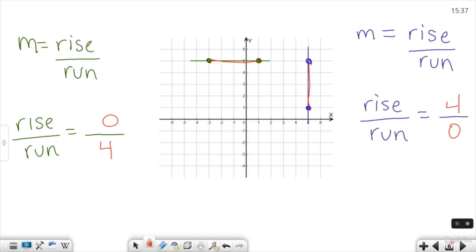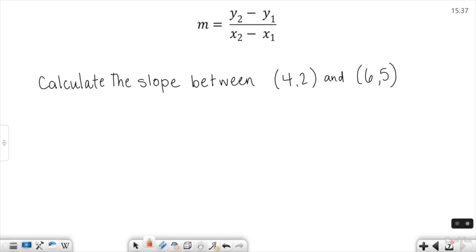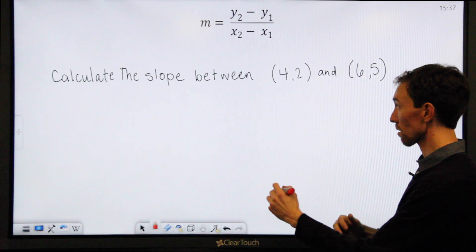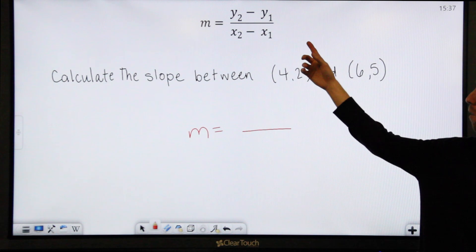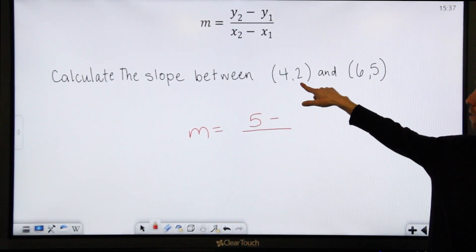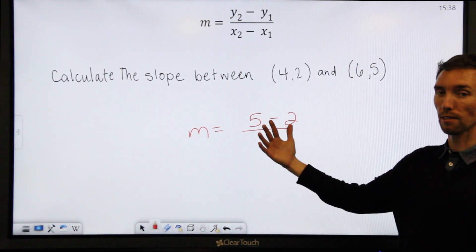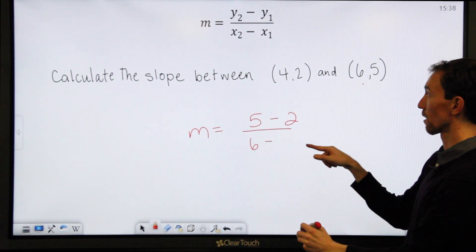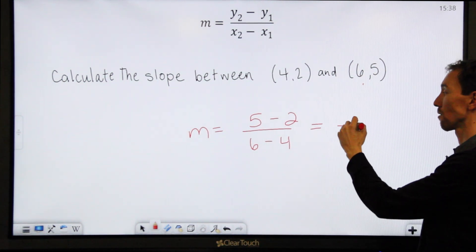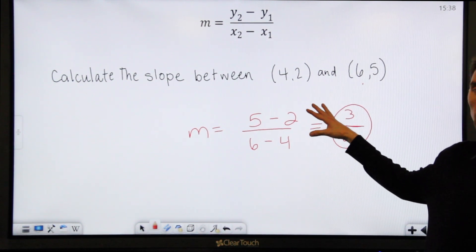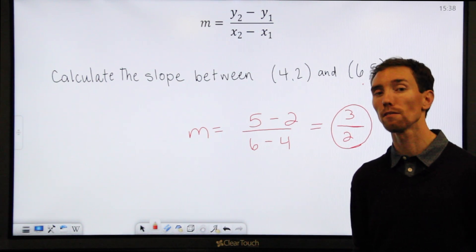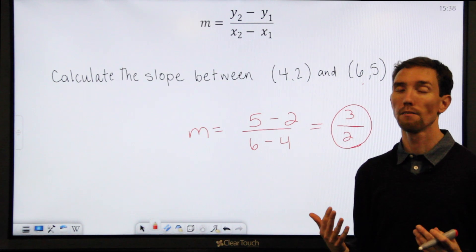So let's take a look at an example of how you can find slope when you're given two points. Calculate the slope between the points (4, 2) and (6, 5). We want to plug these numbers into the slope formula. y2 and y1 are the second and first y values, so y2 is five and y1 is two. x2 and x1 are the second and first x values, so x2 is six and x1 is four. Then you simplify: five minus two is three, six minus four is two. So the slope between these two points is three over two. If you're given a graph, I recommend rise over run; if you're given two points, use the slope formula.